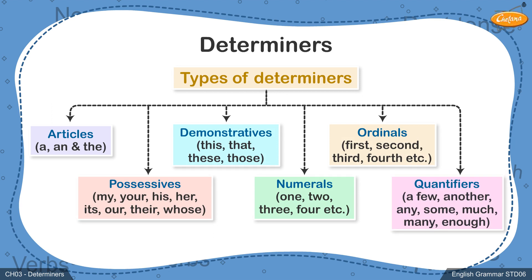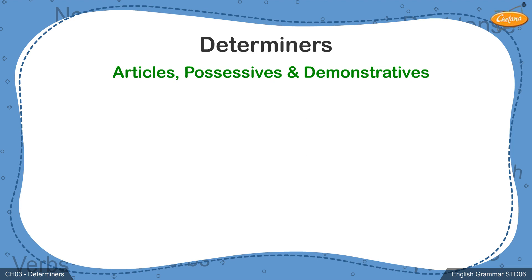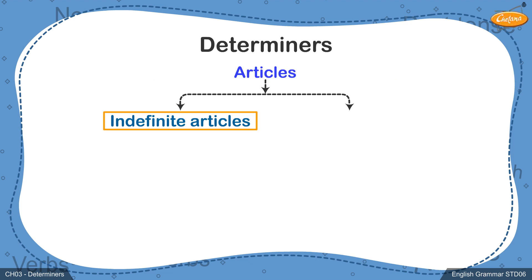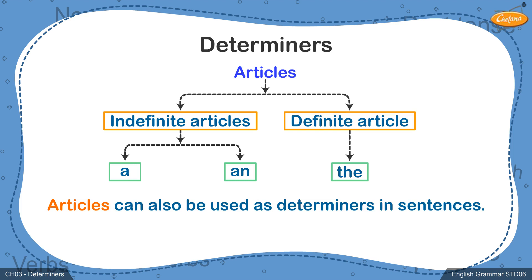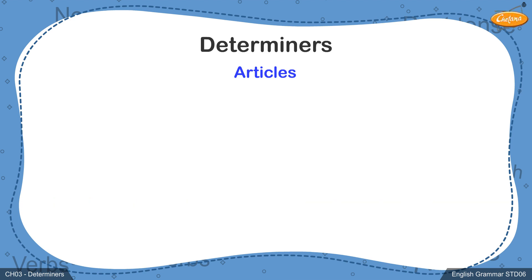Now that we have learned the types of determiners, let's have a look at how each of these determiners can be used in sentences. Articles, possessives and demonstratives — we have already learned about the indefinite articles 'a' and 'an' and the definite article 'the' in the previous chapter. Students, these articles can also be used before a noun or to refer to a specific noun and add more meaning to the sentence. Let's consider a few examples.